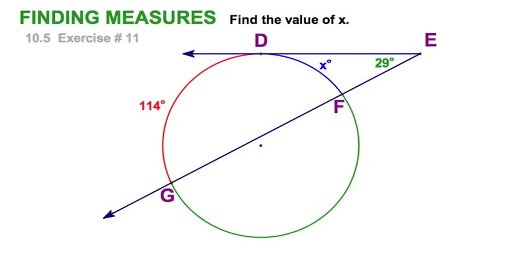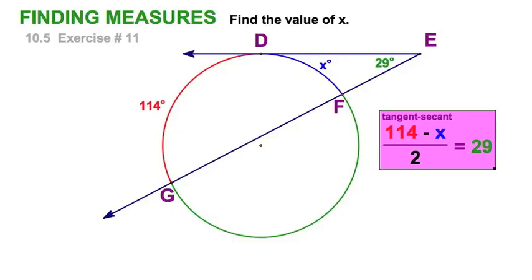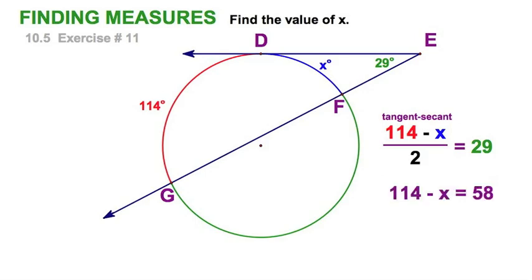Here in exercise 11, we have another exterior angle and this one is a tangent secant. Again, our rule, red minus blue divide by 2 equals our exterior angle, except we're not solving for the angle. We're solving for an arc. Easy enough. Just set it up. Red minus blue divide by 2 equals 29. Let's multiply both sides of the equation by 2, eliminate that denominator and then it's just algebra and we're done.